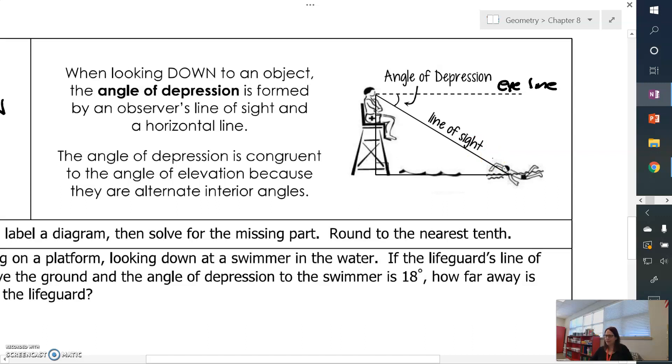And what's really neat is because this is a horizontal line, it's going to be parallel to the bottom of your triangle, which is also horizontal. So now you have a case of alternate interior angles, which means my angle of depression is congruent to this angle down here.